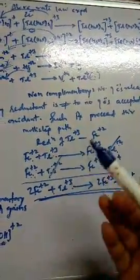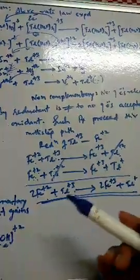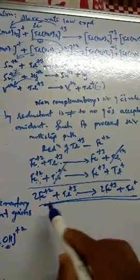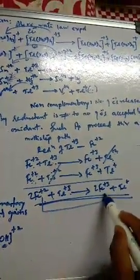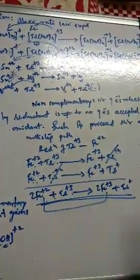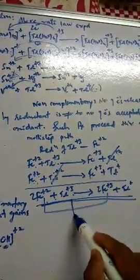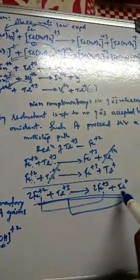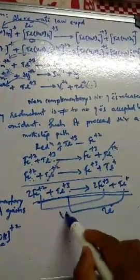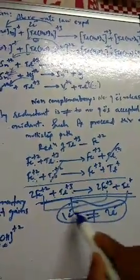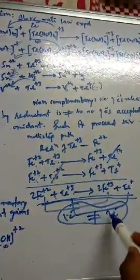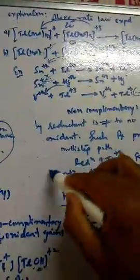In this overall reaction you can see there is no equivalence between the electrons released by the reductant and accepted by the oxidant. The oxidation state changes are: Fe goes from +2 to +3 (one-electron steps), while Tl goes from +3 to +1 (a two-electron overall change). There is no consistent 2-electron equivalence — it is a 1-electron, then 1-electron stepwise process. That is why such reactions are called non-complementary reactions.